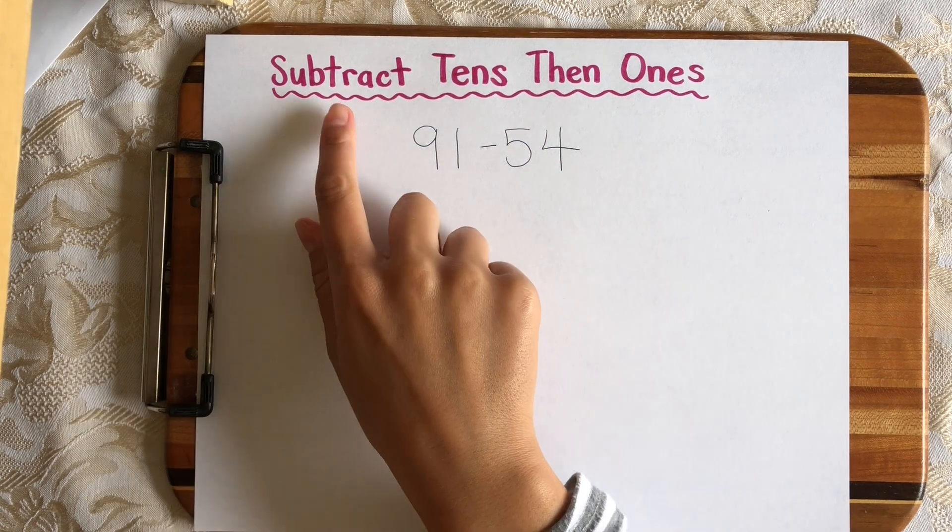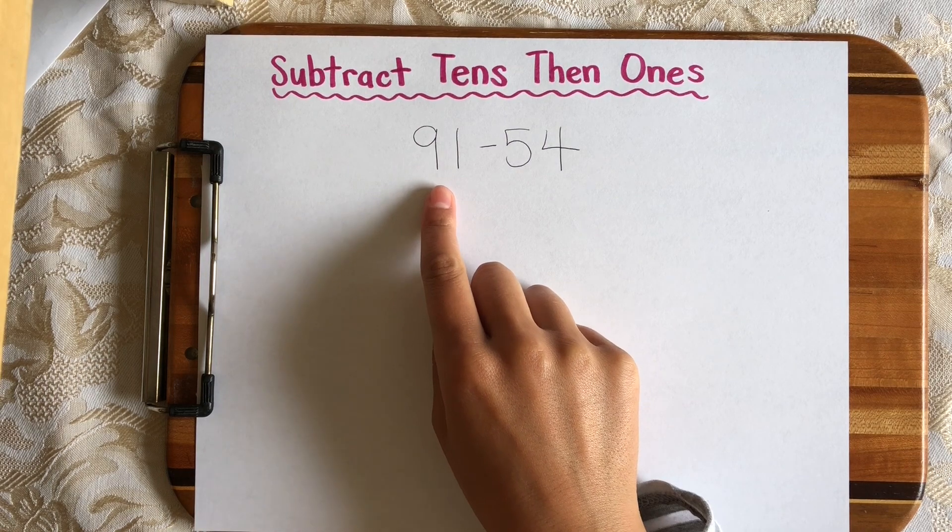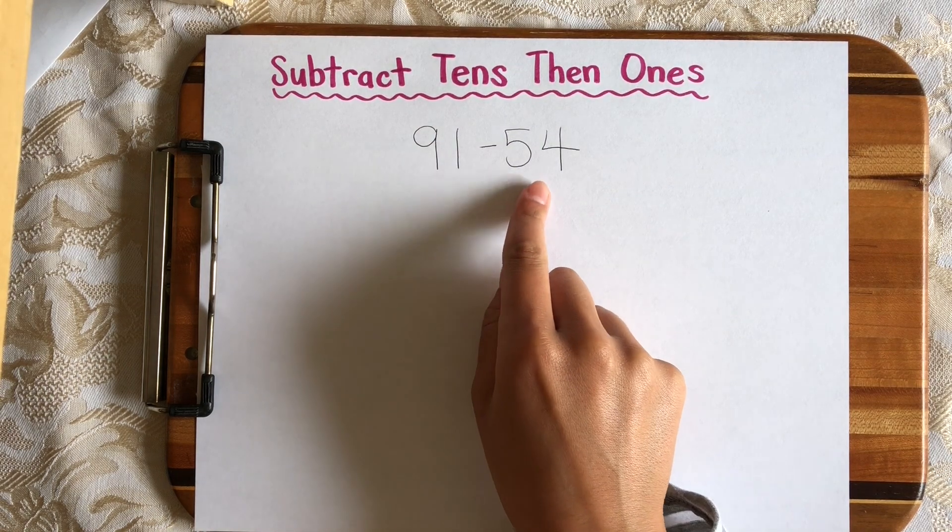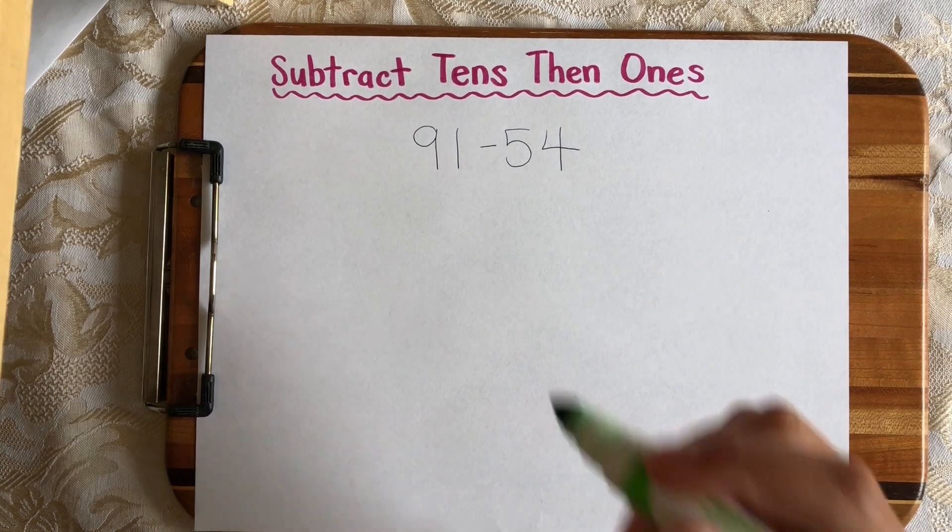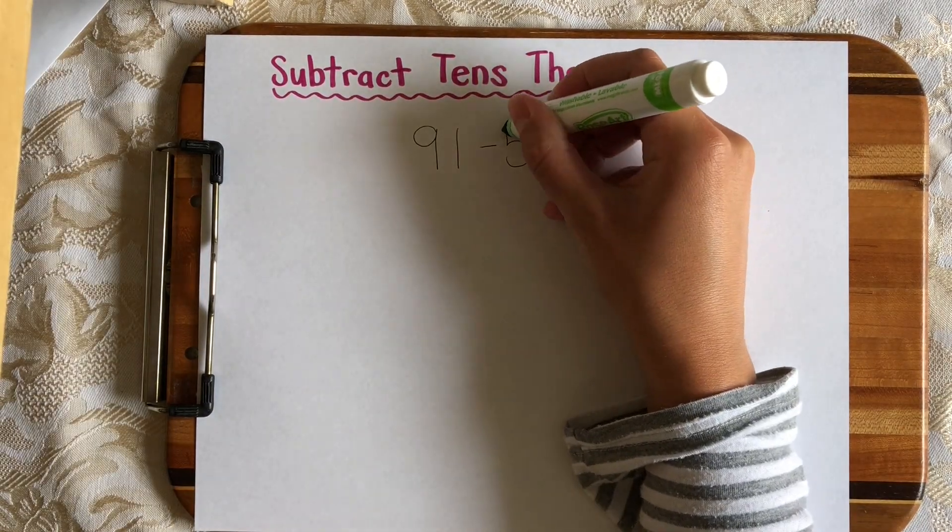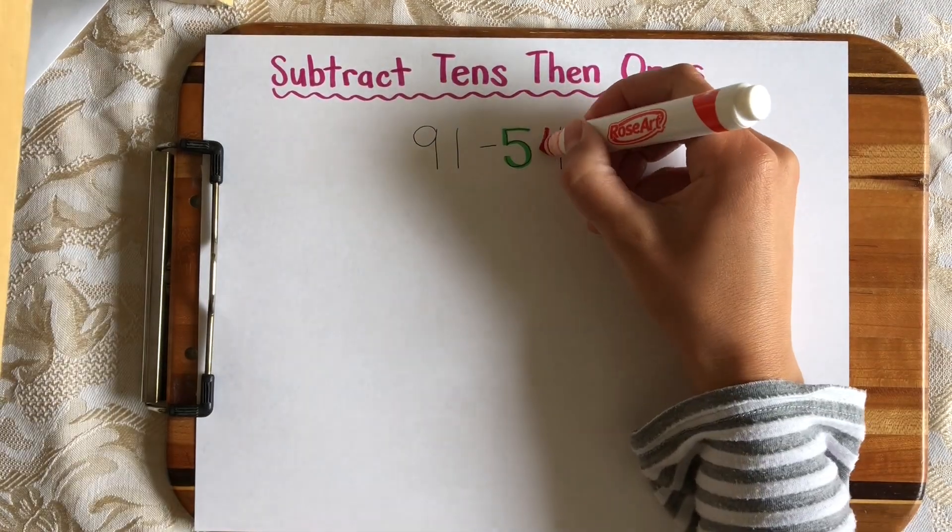My next strategy is called subtract 10s, then 1s. So in this strategy, we're going to leave the first number, the biggest number alone, and we're just going to focus on the second number, the number that we are subtracting.